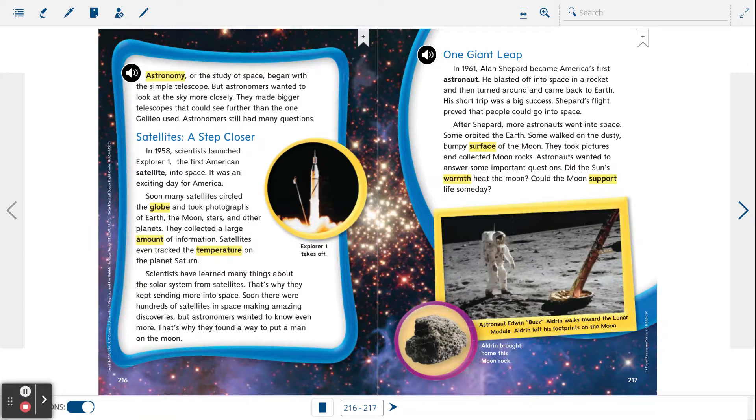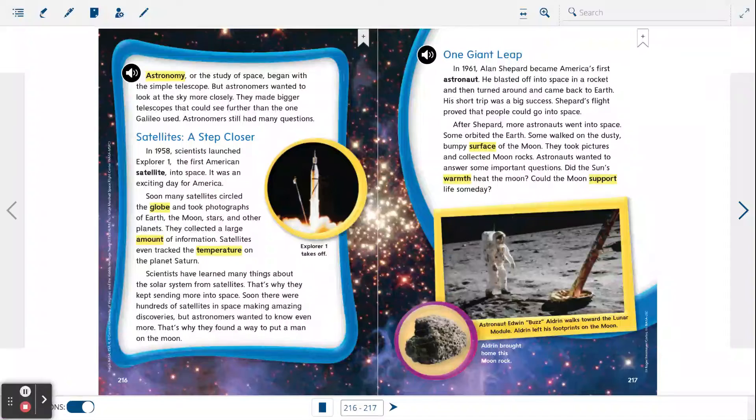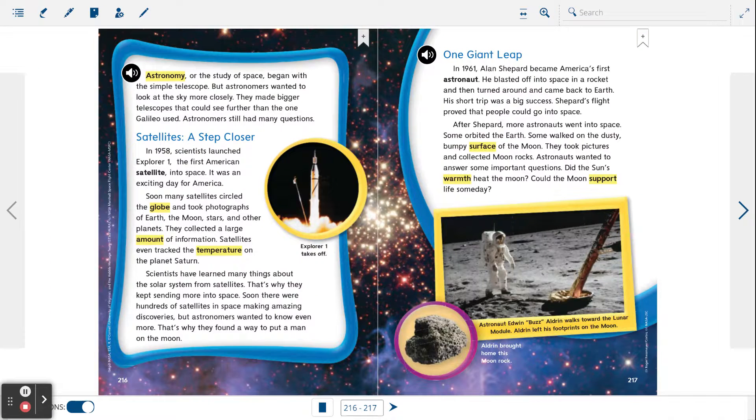Satellites a step closer. In 1958, scientists launched Explorer 1, the first American satellite into space. It was an exciting day for America. Soon, many satellites circled the globe and took photographs of Earth, the moon, stars, and other planets. They collected a large amount of information. Satellites even tracked the temperature on the planet Saturn.